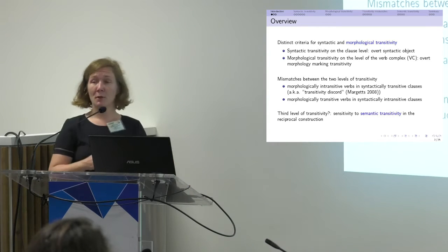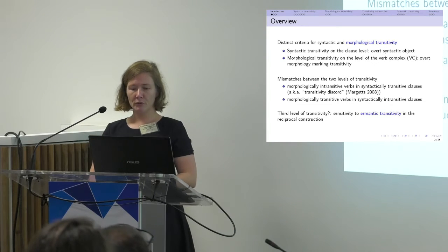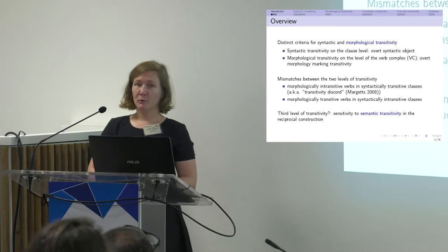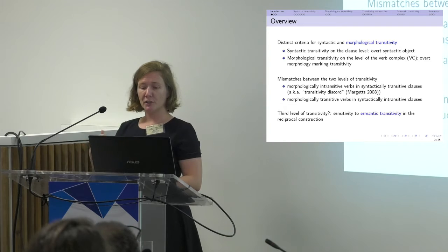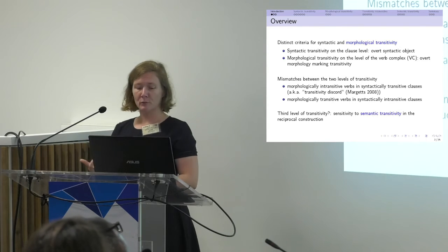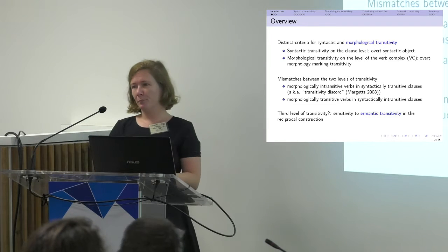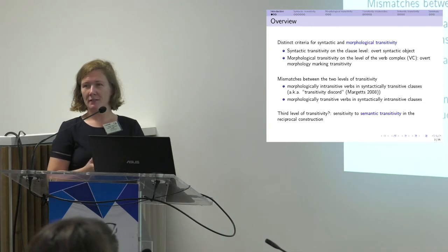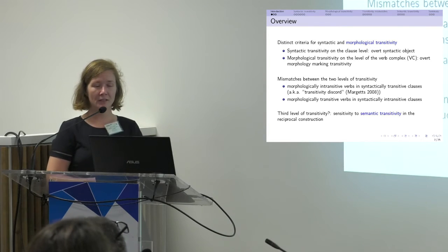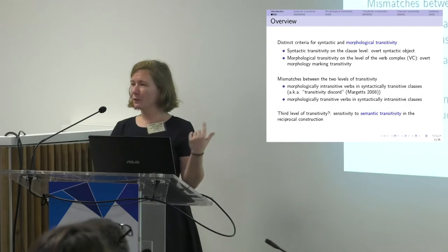Monoalu shows mismatches between those two levels of transitivity. On one hand we get morphologically intransitive verbs and syntactically transitive clauses — that's the transitivity discord construction that Anna has described. Monoalu also shows a reversal of that mismatch with morphologically transitive verbs and syntactically intransitive clauses. And originally we thought we might also be able to identify a third level of transitivity where the reciprocal construction is sensitive to possibly semantic transitivity, but we now think that might be a bit problematic.